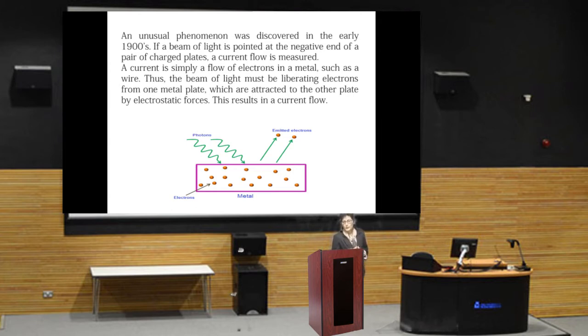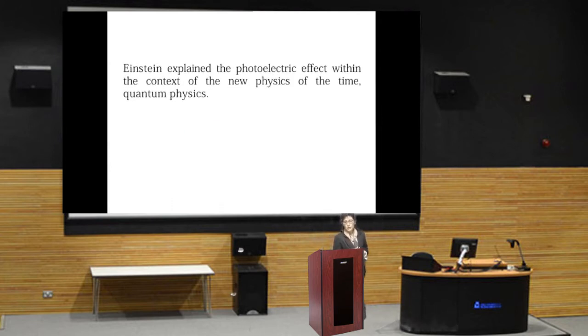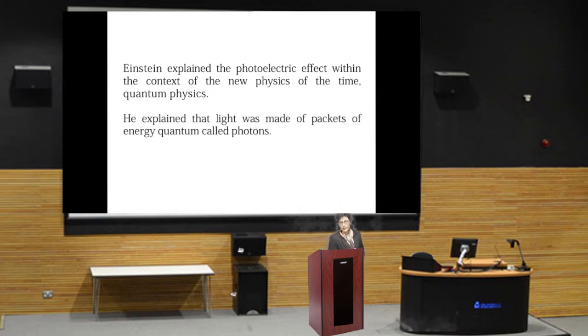The observed phenomena was that the current flow was basically constant with the light strength. Einstein successfully explained the photoelectric effect within the context of the new physics of the time, quantum physics. In his scientific paper, he showed that light was made up of packets of energy called photons. Each photon carries a specific energy related to its wavelength.